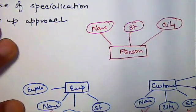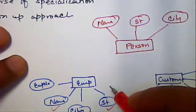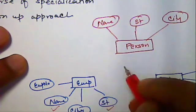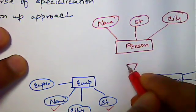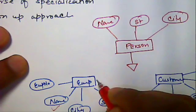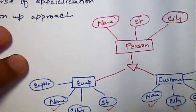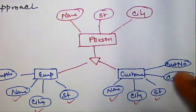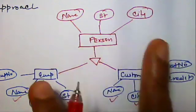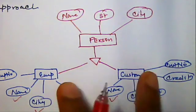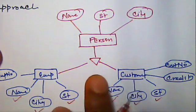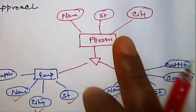So what we are seeing here is this will be also represented by this triangular notation, which if you go in reverse manner from bottom to top says these two entities employee and customer has been generalized into a person entity.